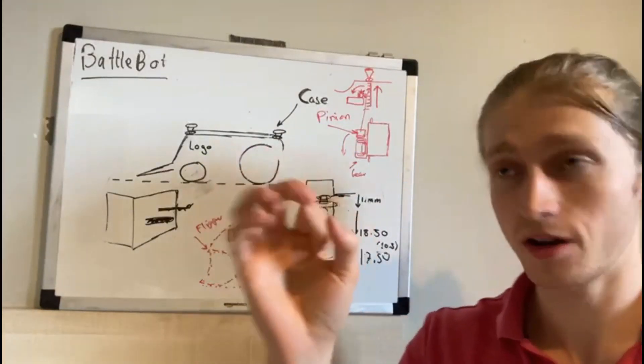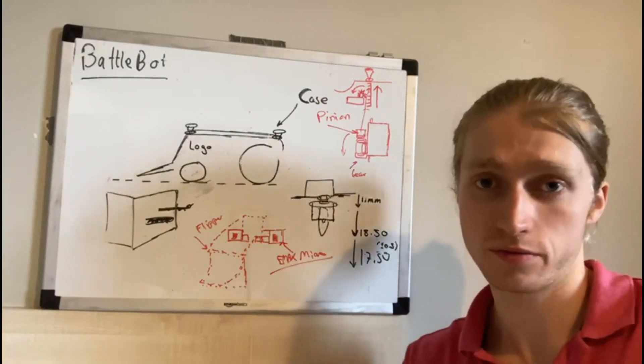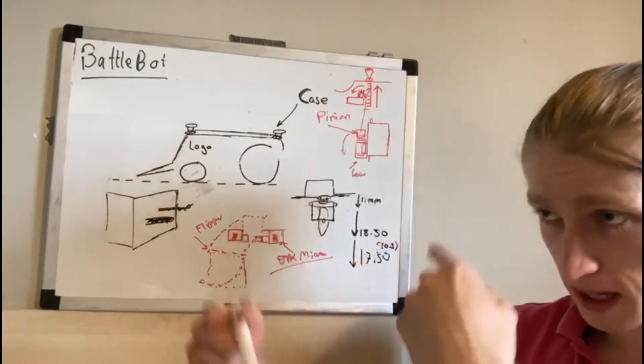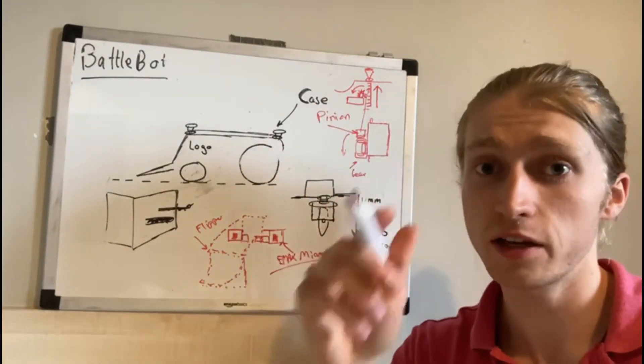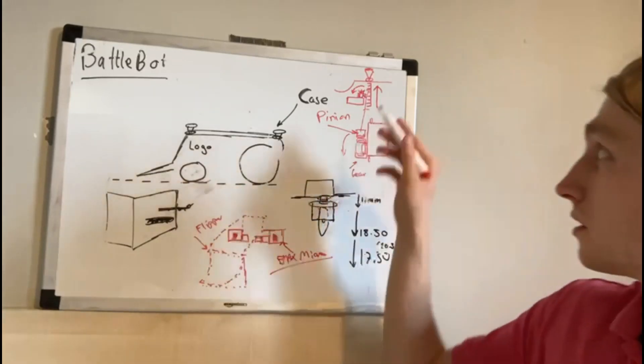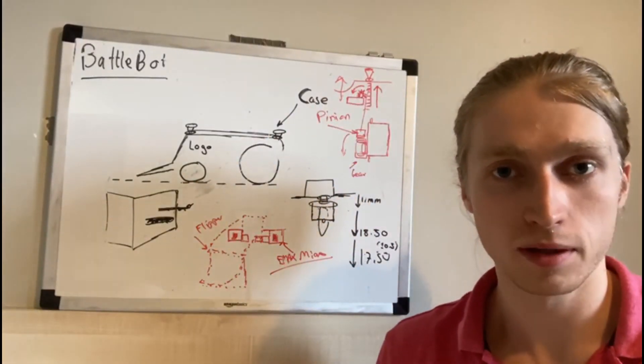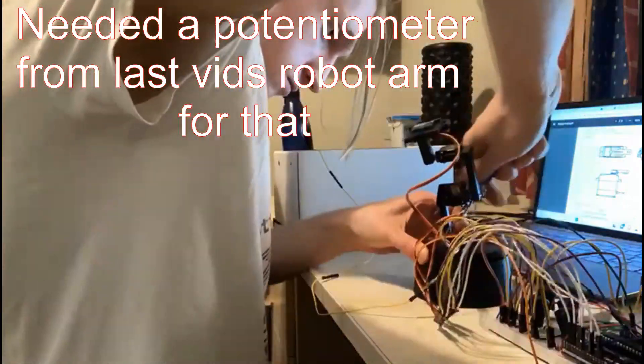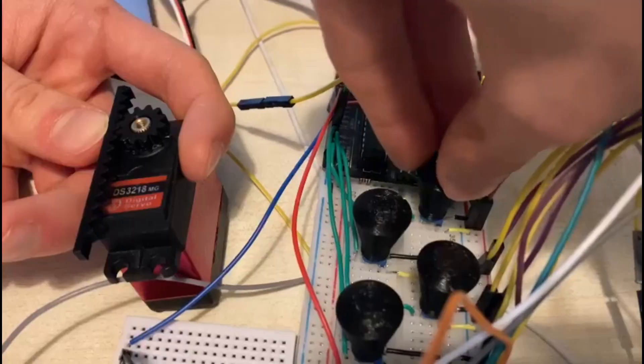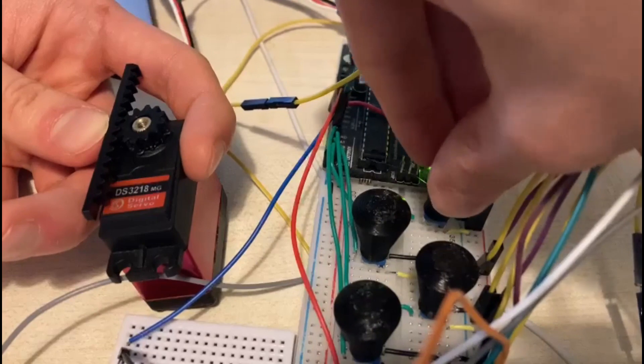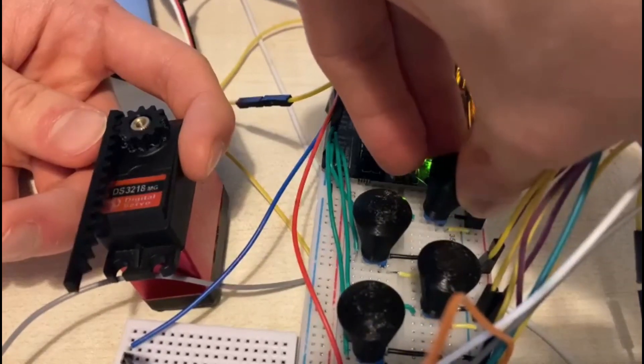So you've got this gear, and it sits on the horn of the servo motor. And when it spins, it can move a linear gear, also known as a pinion, which should cause my flipper to move up. Let's see that in practice. I'm sorry, little one. My design worked! When I rotated the servo, it moved the pinion in a linear motion.